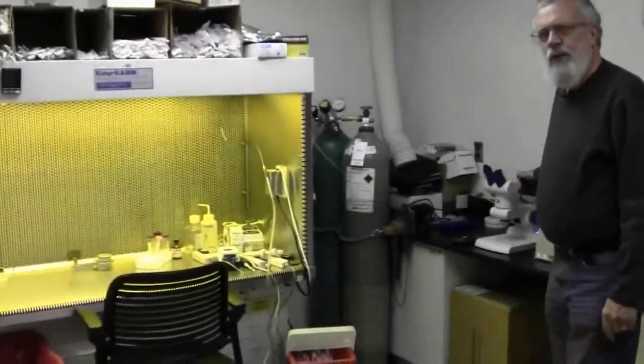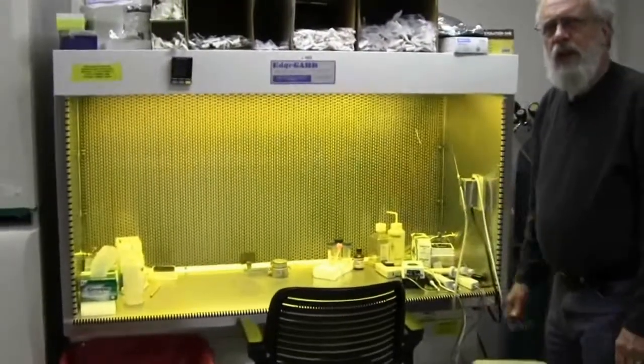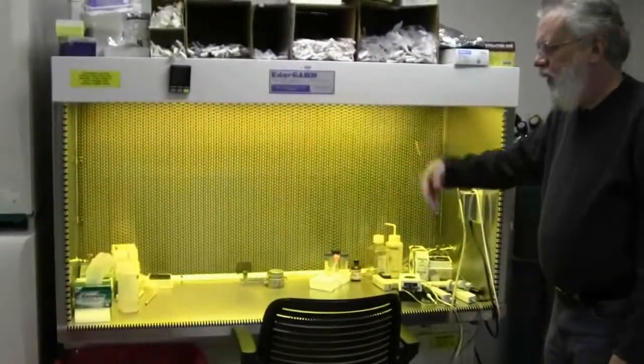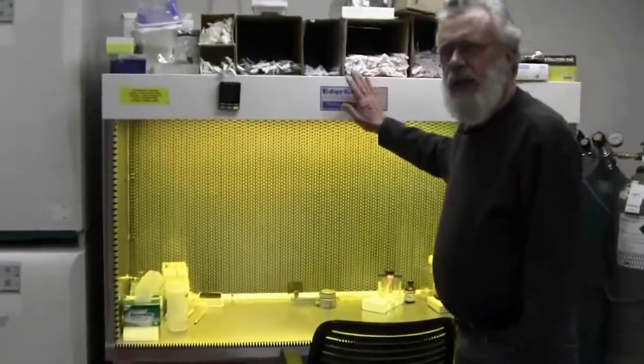We have microscopes they need to check on the condition of the cells. We have the lab bench where they clean the area that they can work with the cells. We have the material that they need for doing their experiments.